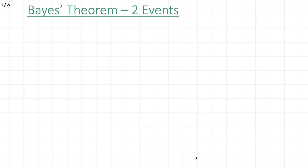We'll be looking at Bayes' theorem for two events and three events. We'll go through the proof and then do two examples. It's important to know that Bayes' theorem includes infinitely many events. However, for a math IB AHL syllabus, the maximum you'll be required to do is two events. So let's start with the proof for Bayes' theorem for two events, and then I'll explain how and when we use this theorem.